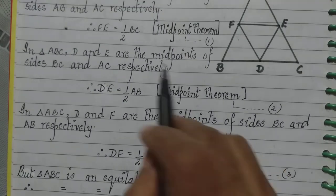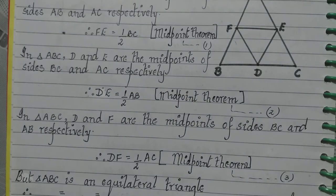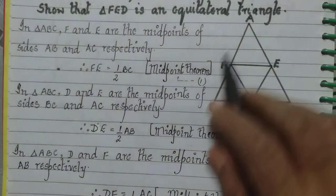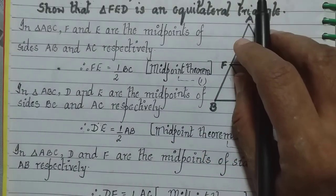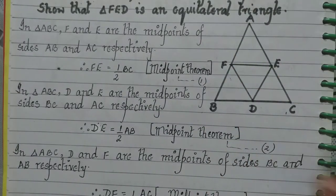Okay, so now I numbered all these three findings what I got as 1, 2 and 3. Now they are given the triangle ABC is an equilateral triangle. Therefore, AB equal to BC equal to AC.